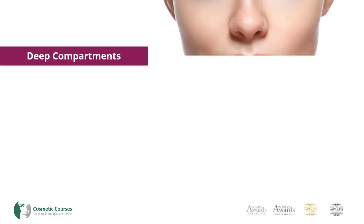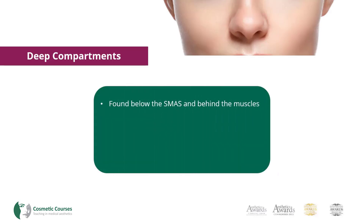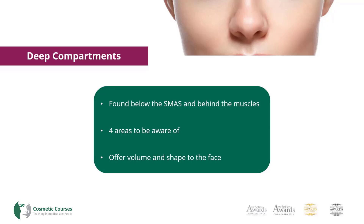The deep compartments are found below the superficial muscular aponeurotic system and behind the muscles of the face. There are four areas that we need to be aware of. The deep compartments of fat are there to offer volume and shape to the face.